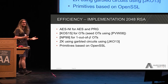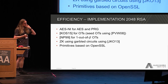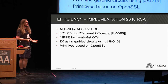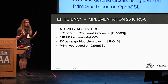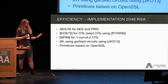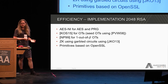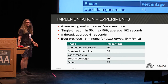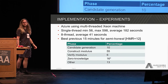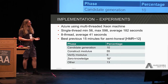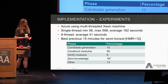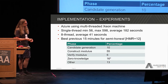We implemented this for constructing 2048-bit RSA. In the implementation we used AES for the PRG, OT extension by Keller et al. to implement all the OTs — which is more or less the only big cryptographic primitive other than AES used in this protocol — the zero knowledge was done using the Garbled circuits approach, and most other primitives are based on OpenSSL. We ran experiments on the Azure service using a SEM machine. For a single thread we get a lowest time of 56 seconds, highest time of 598 seconds, and an average of 182 seconds.